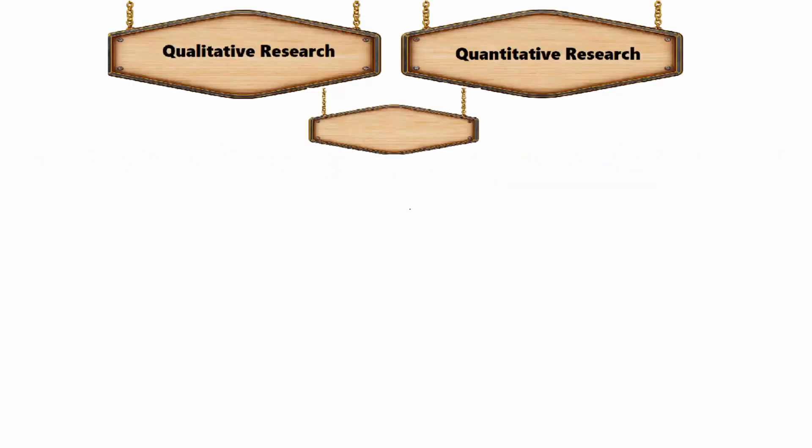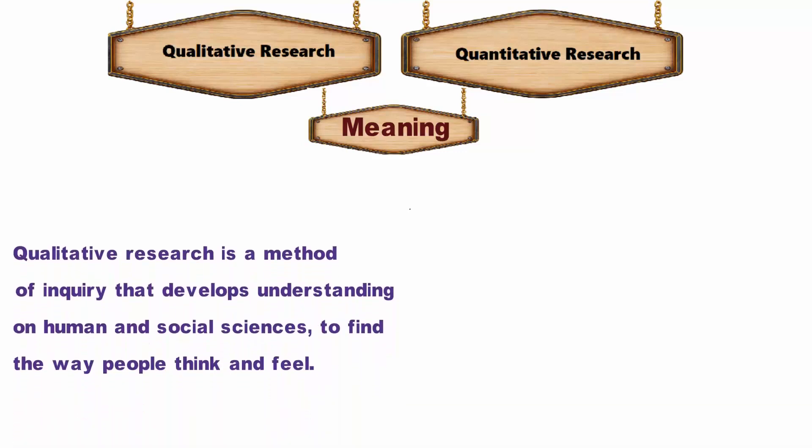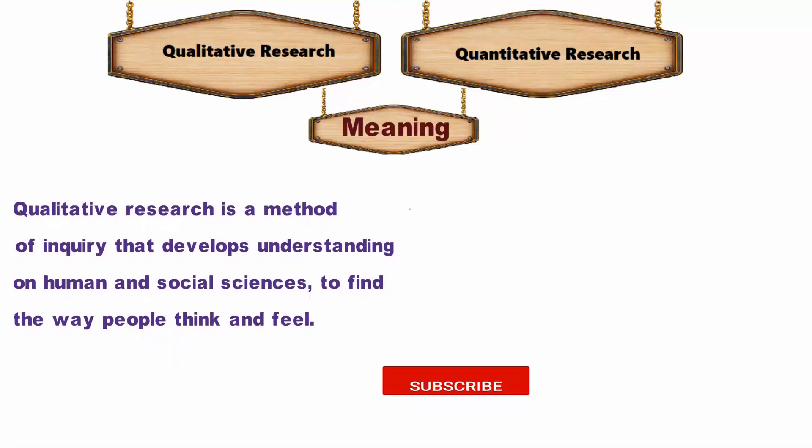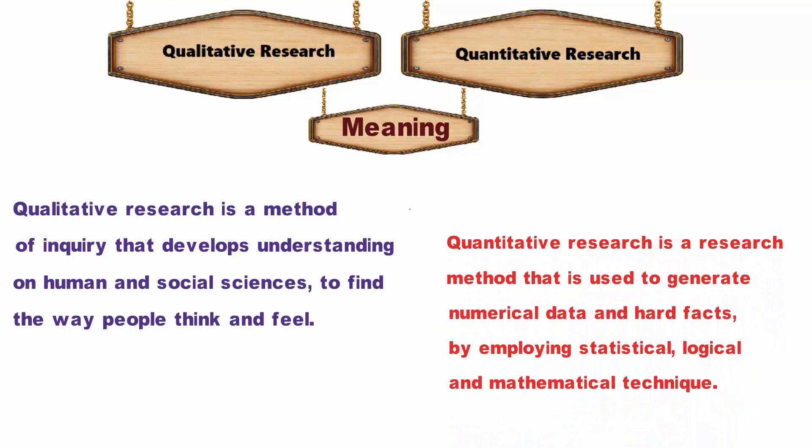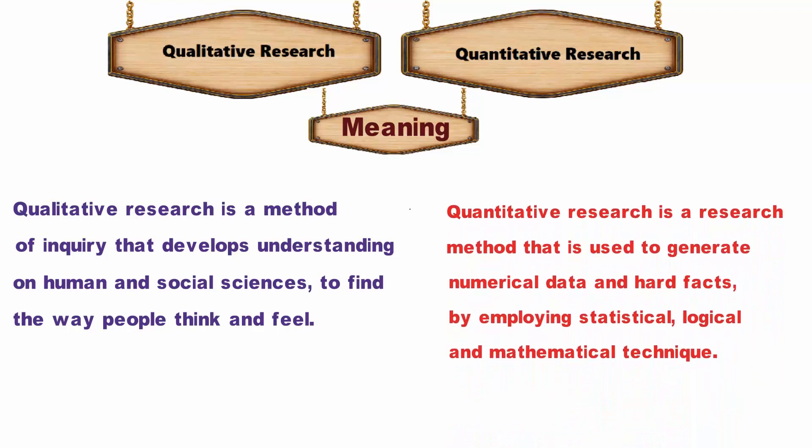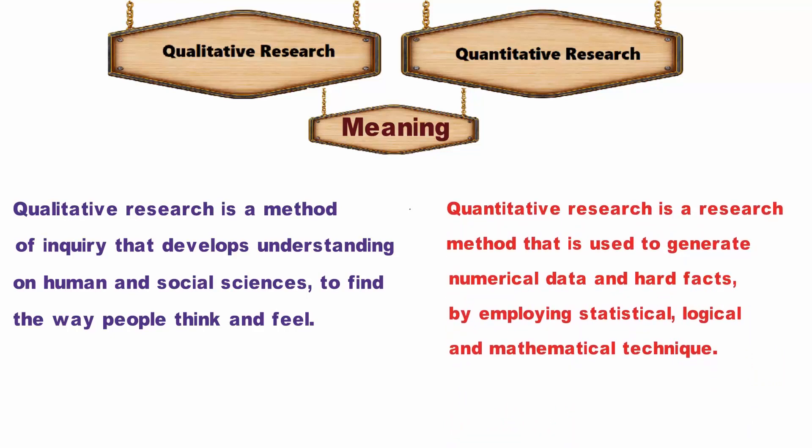Okay, now going to main topic. The differences between qualitative and quantitative research can be drawn clearly on the following grounds. One, meaning: qualitative research is a method of inquiry that develops understanding on human and social sciences, to find the way people think and feel. Quantitative research is a research method that is used to generate numerical data and hard facts, by employing statistical, logical and mathematical technique.